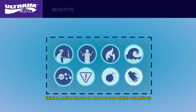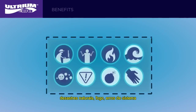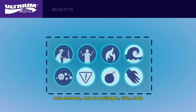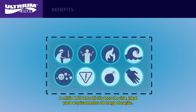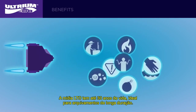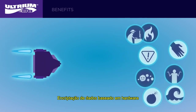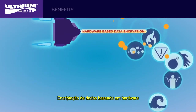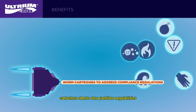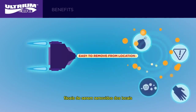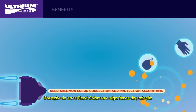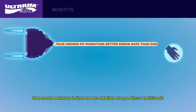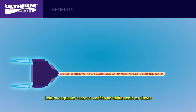There are lots of threats that can make your data vulnerable: natural disasters, fire, system error, human error, mirroring errors, viruses, theft, hackers, and sabotage, just to name a few. LTO media has up to 30 years shelf life, ideal for long-term data archiving. Hardware-based data encryption, WORM cartridges to address compliance regulations, easy to remove from location, and offline storage to protect from online data corruption. Reed-Solomon error correction and protection algorithms deliver orders of magnitude better error rate than disk, and read-while-write technology immediately verifies data.